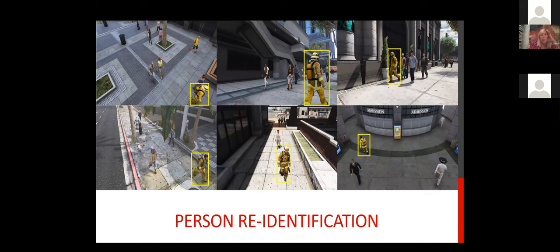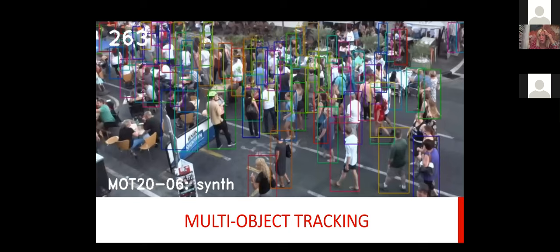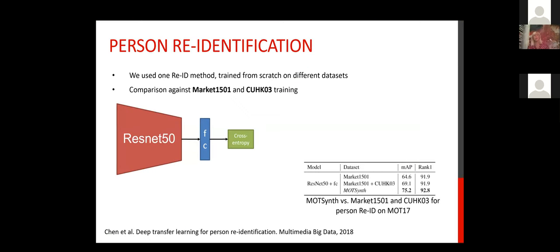Similarly, for a simple re-identification experiment — using ResNet as a feature extractor trained only with cross-entropy — the results in mean average precision and rank-one accuracy are absolutely very high when the system is trained with MOTSIM.